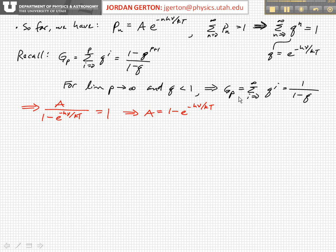And this implies that A is equal to 1 minus e to the minus h nu over kT. And I should point out here that there should be an A right there. All right, so this gives you an expression for A.